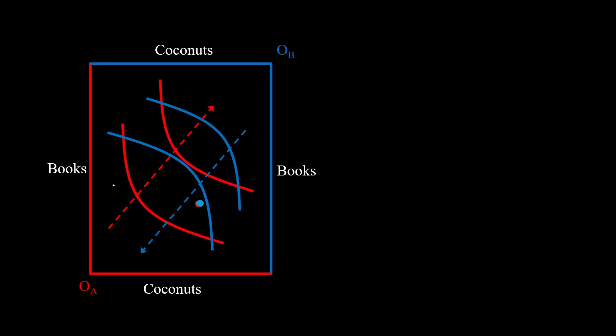And that's our Edgeworth box. Now this is the origin from A's perspective and this becomes the origin from B's perspective.